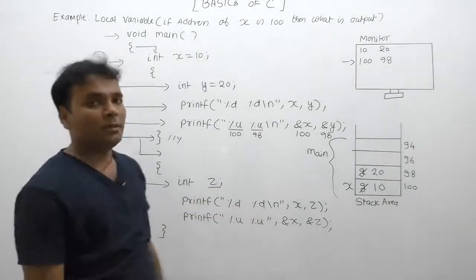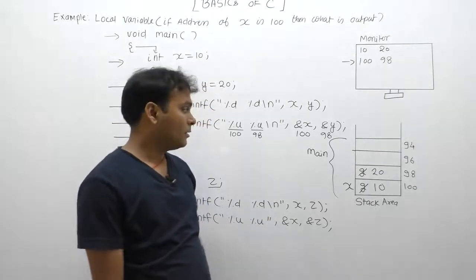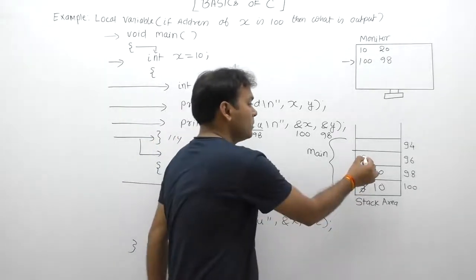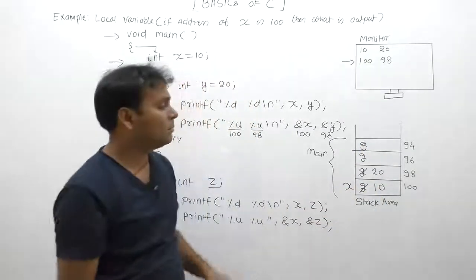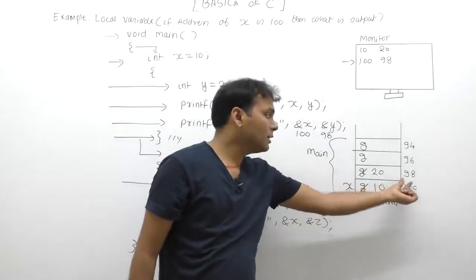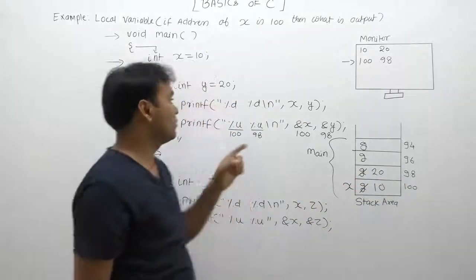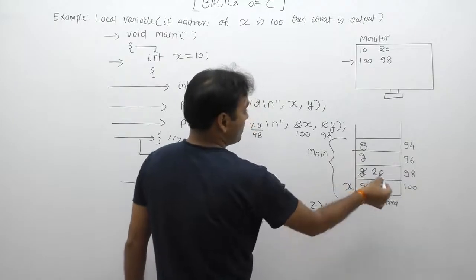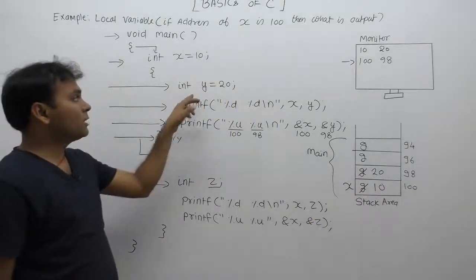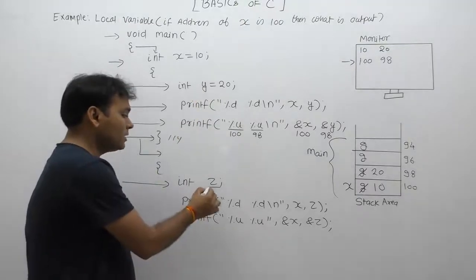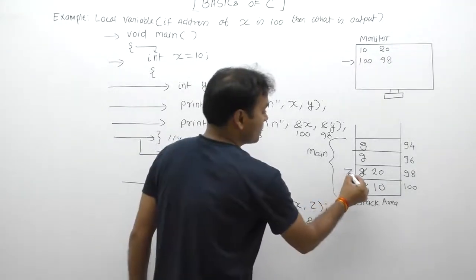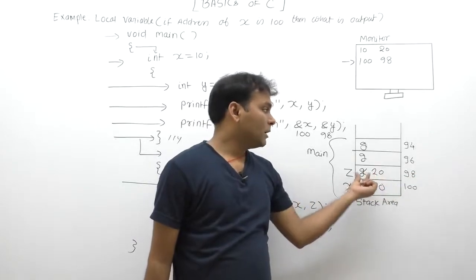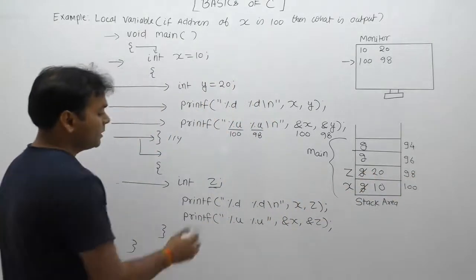As we know, any variable will be created at the top of the stack. Currently at the top of the stack, the next available location is 98, which previously held y's value of 20. This location at address 98 is now allocated for variable z. Therefore, we are able to observe that the address of z is 98 and the value of z is 20 — because z was not initialized and it inherits the previous garbage value left at that memory location.